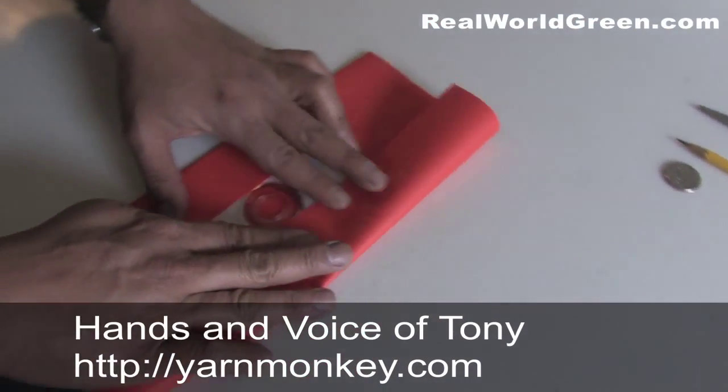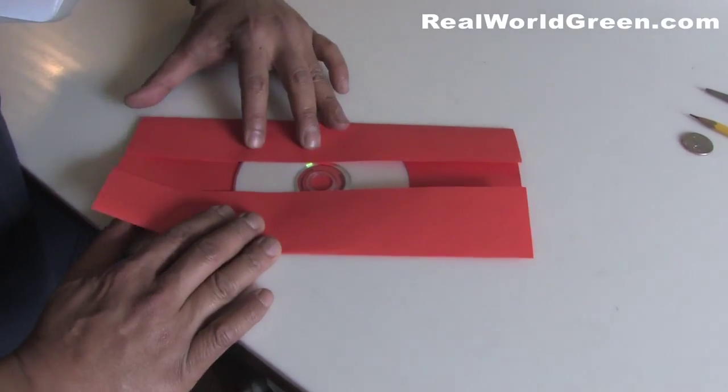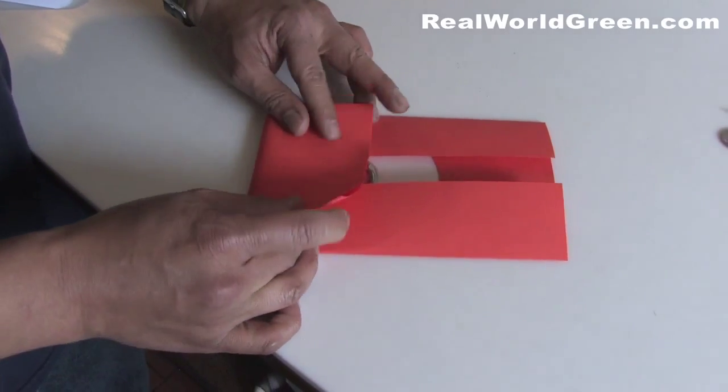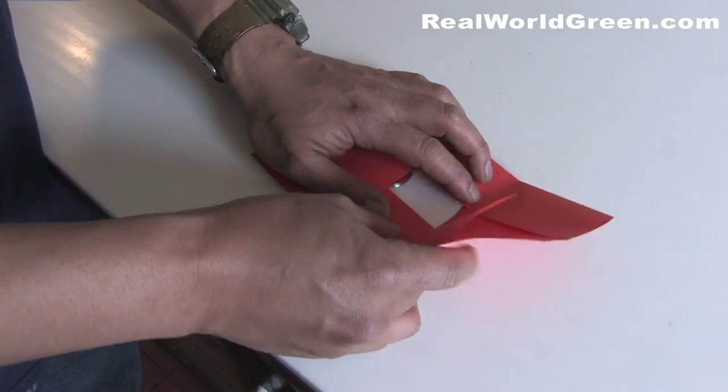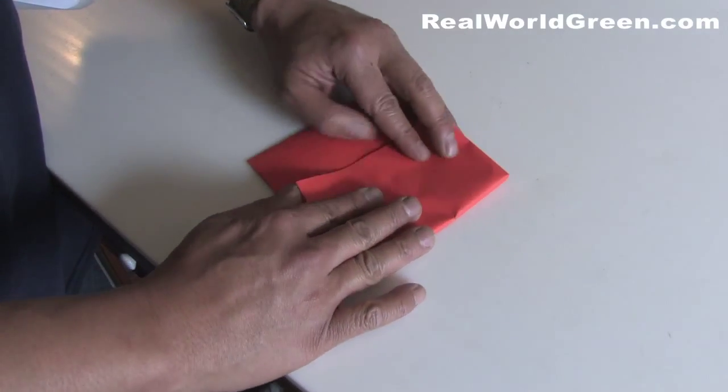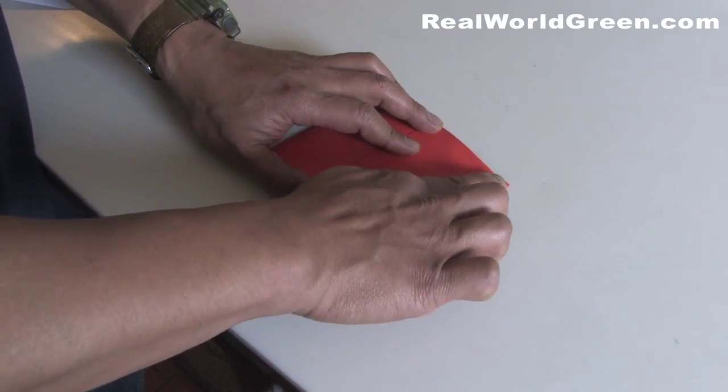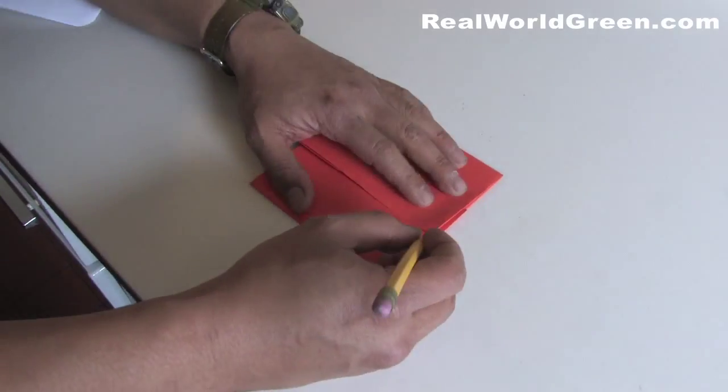Turn it around. Now we're going to do a second set of folds by bringing that up to the middle. Make sure it's snug. Bring that over nice and snug. We're going to make a little lip.